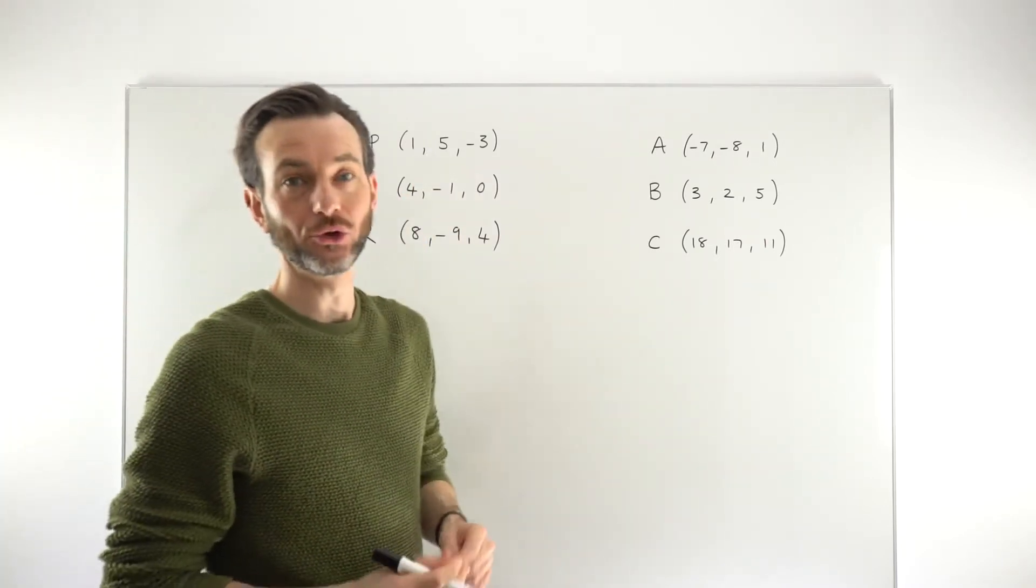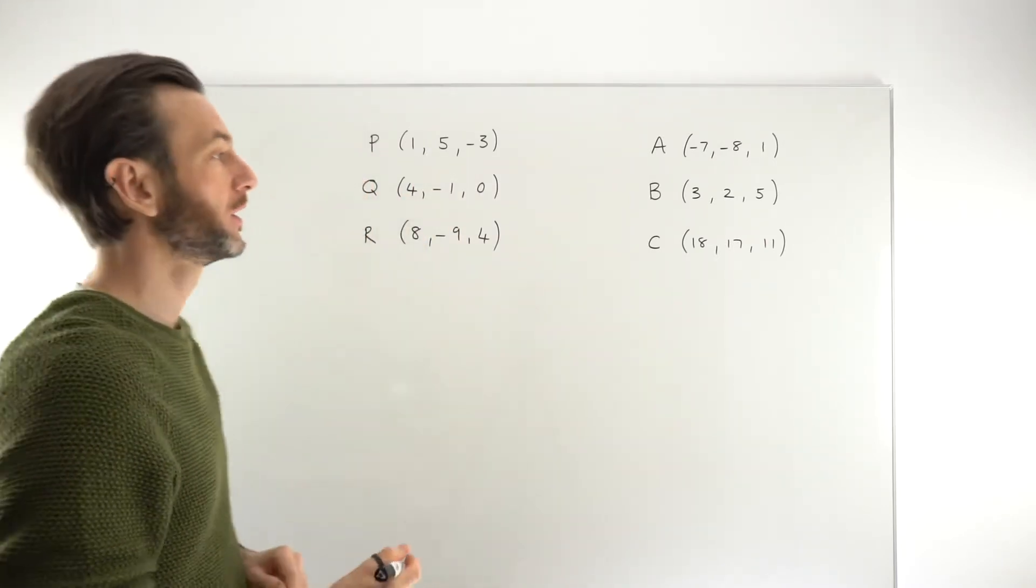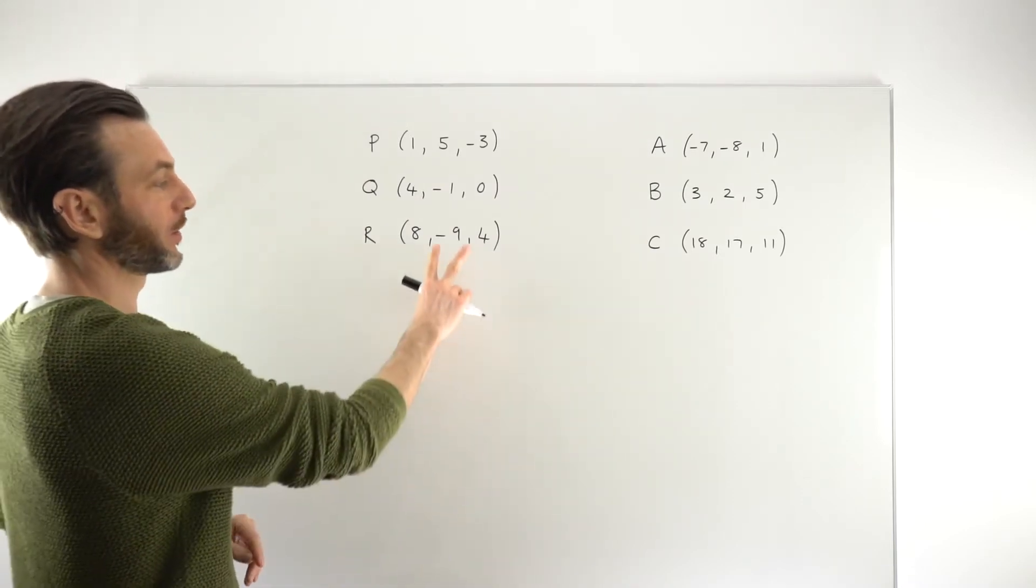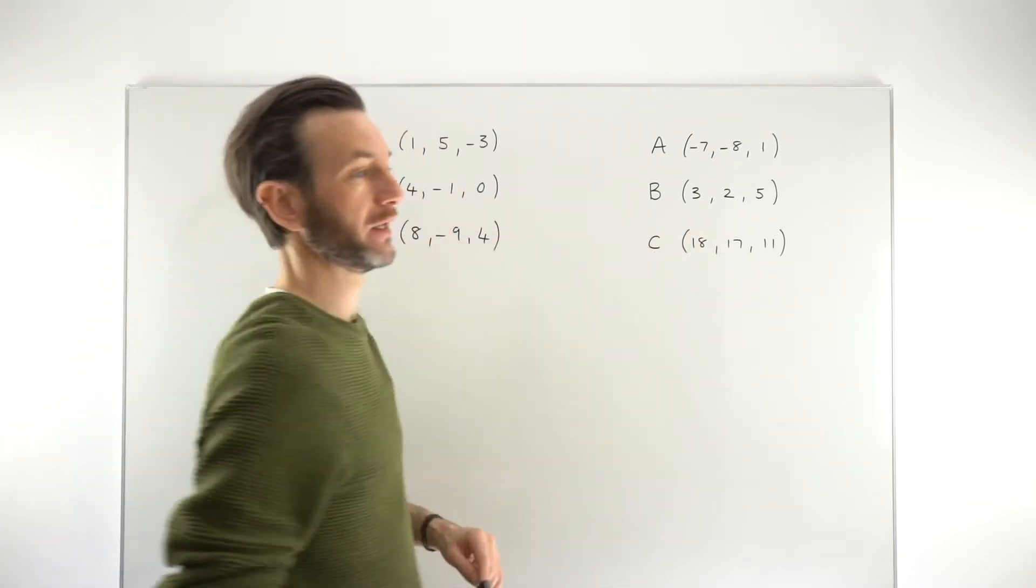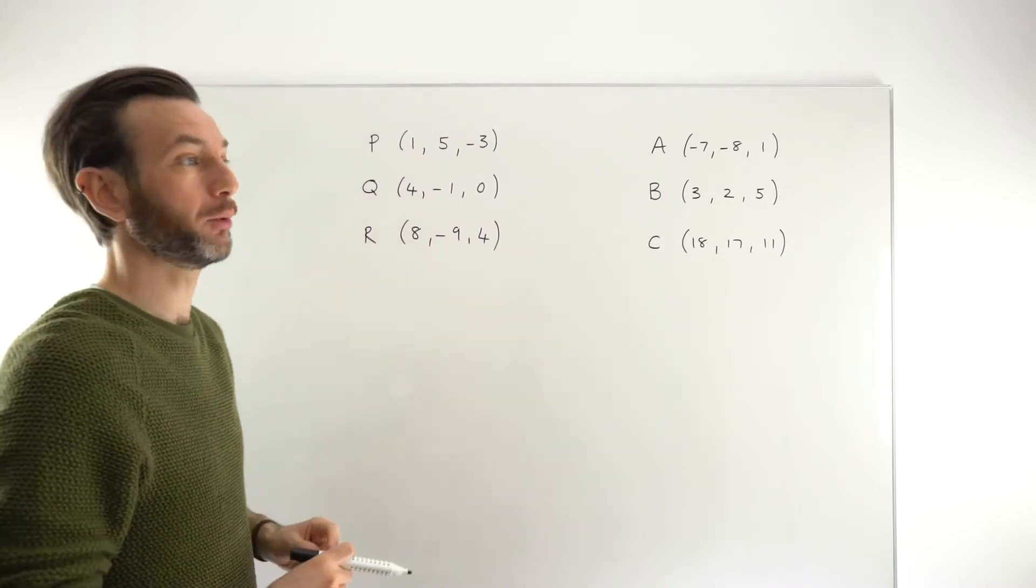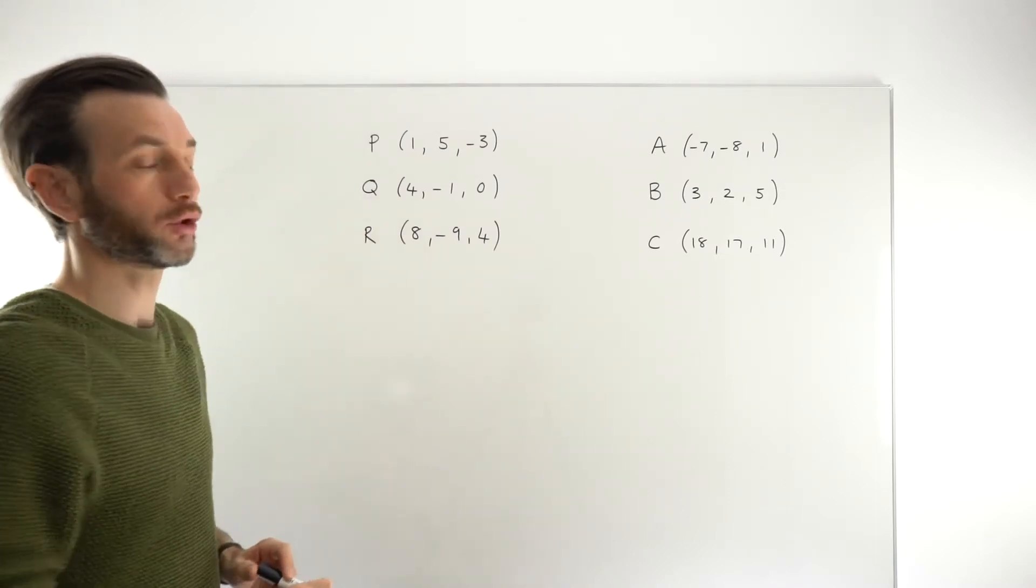So we're trying to prove here that three points are lined up. The points can be in either two-dimensional or three-dimensional space. Most of the examples in this topic are in 3D space. Our two examples here will be in 3D space. But you can apply this technique to points that lie in 2D space just in the same way.